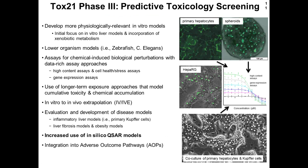As a result, we've moved into phase three of Tox21. The goals are to develop more physiologically relevant in vitro models that model complex biology where multiple pathways work together, with an initial focus on in vitro liver models incorporating xenobiotic metabolism. We're also looking at lower organisms like zebrafish and C. elegans, and generating data-rich assays such as high content assays, cell stress pathway assays, and gene expression assays with large numbers of genes in high throughput to understand how chemicals perturb biological pathways.